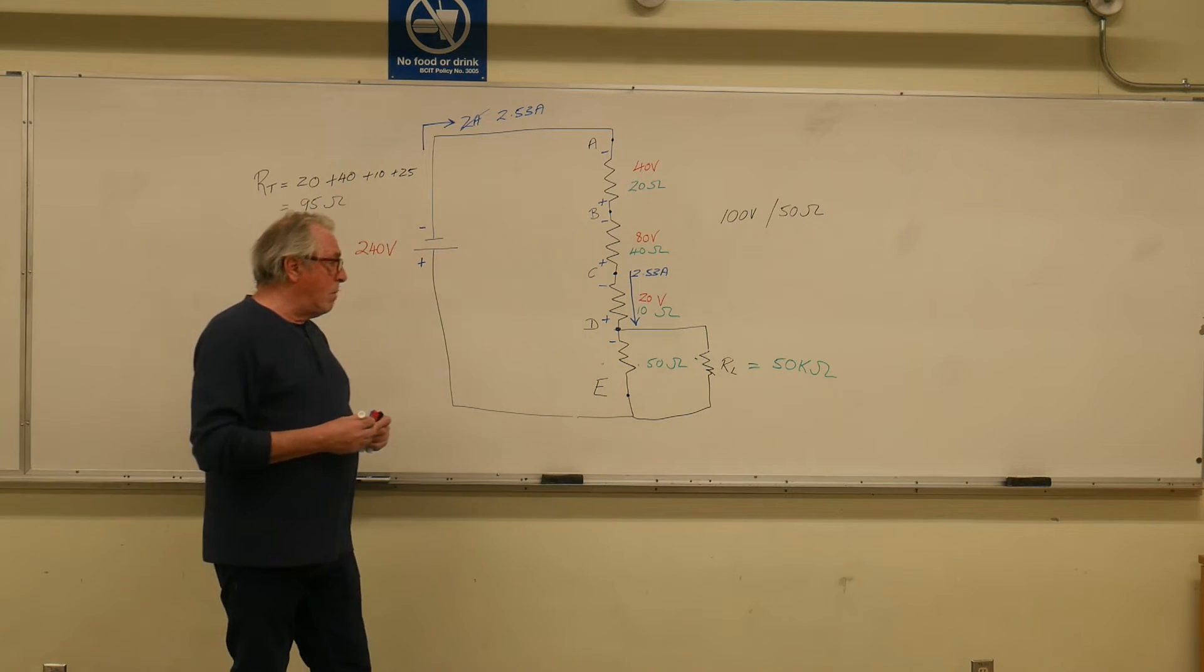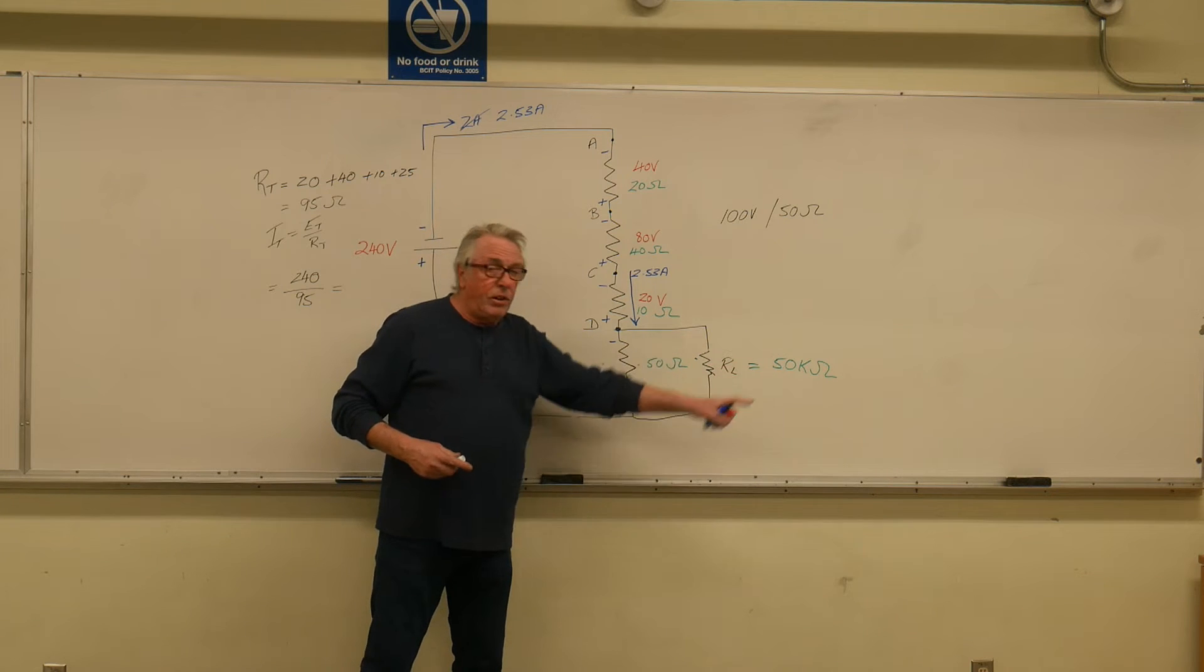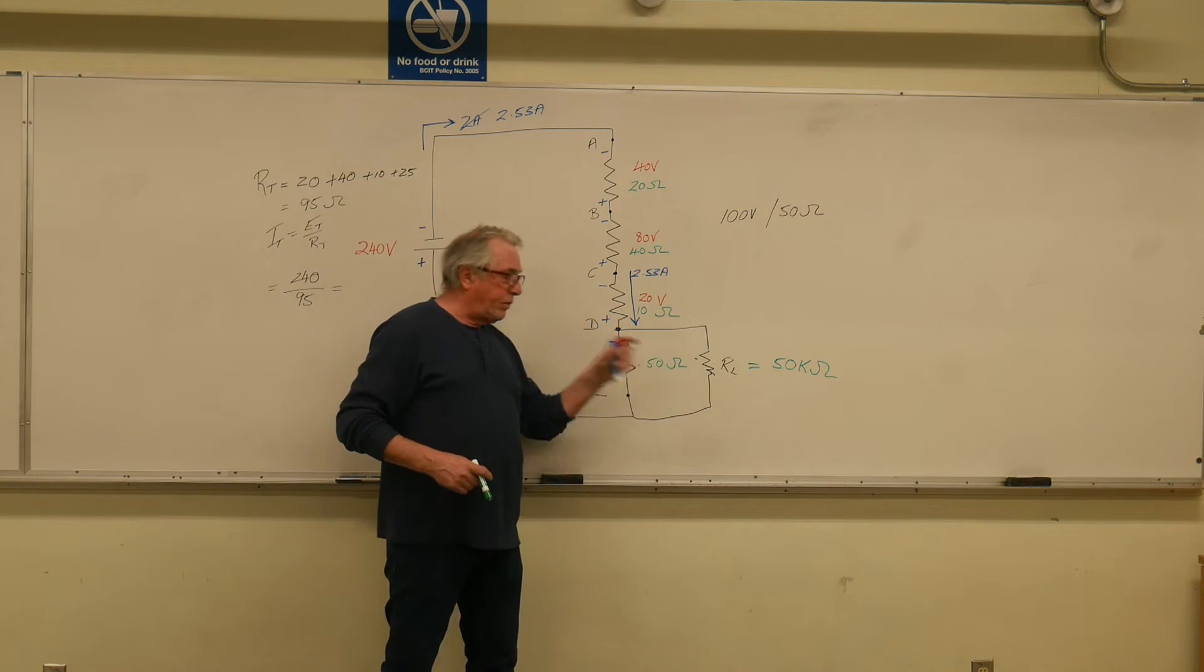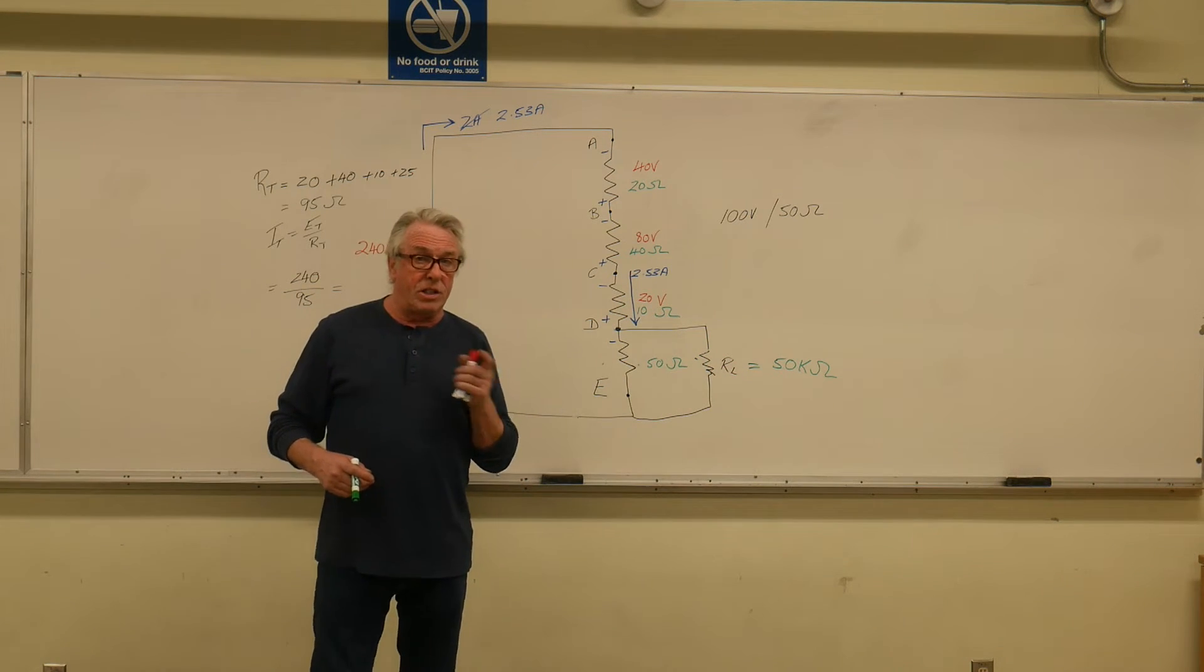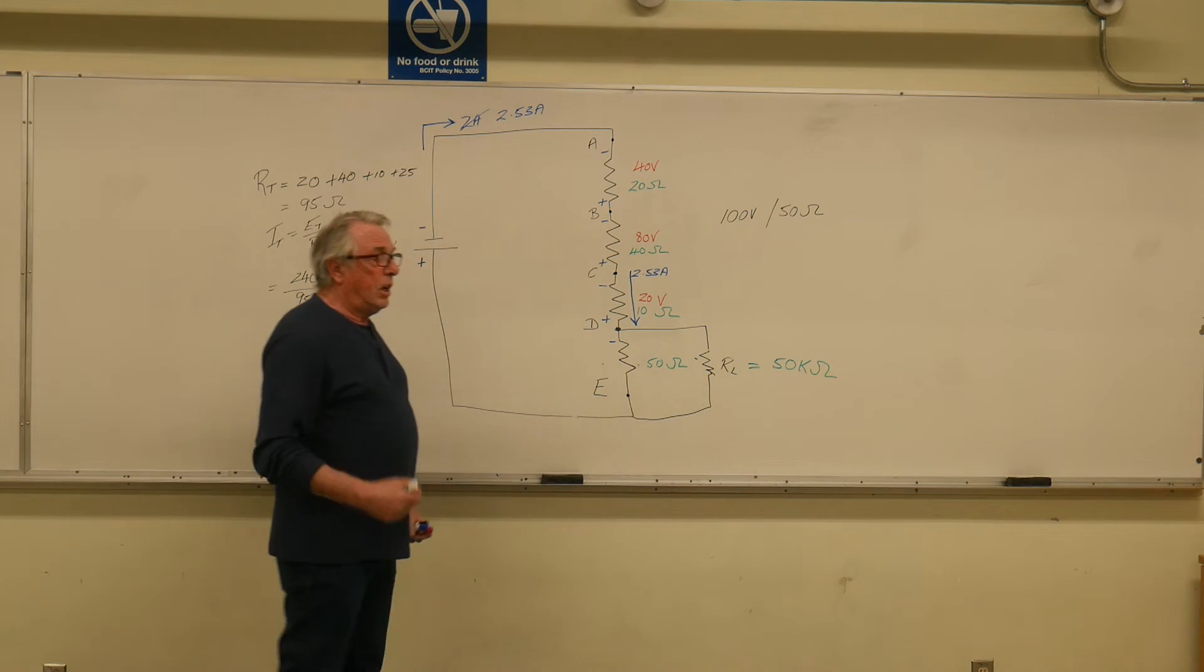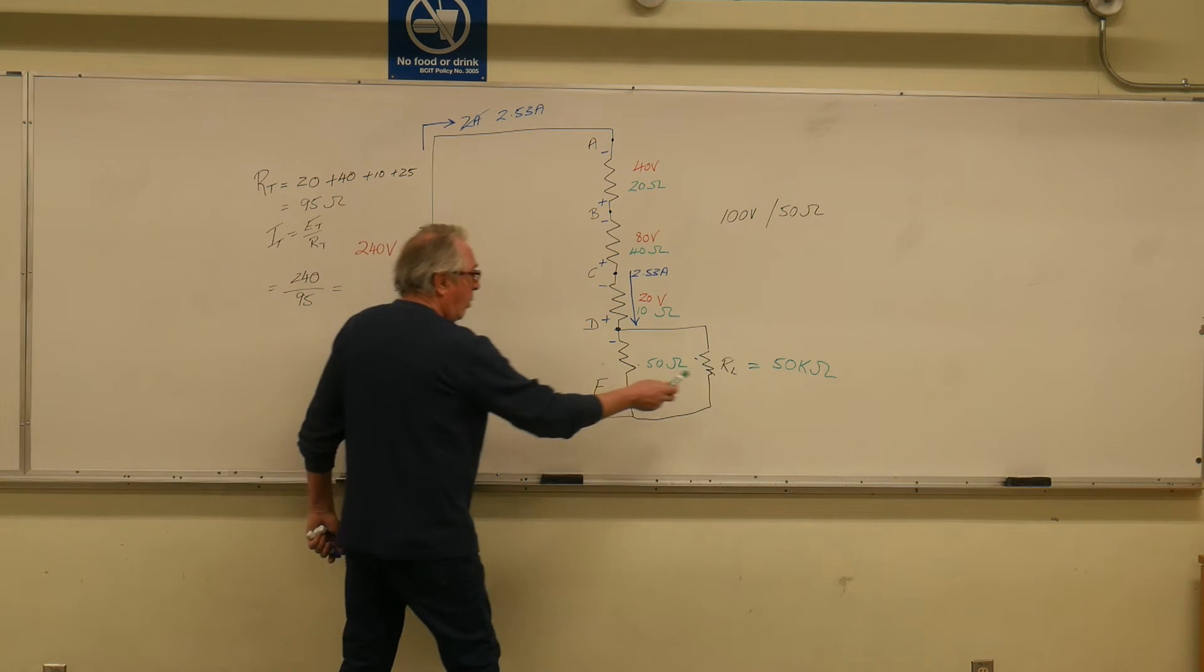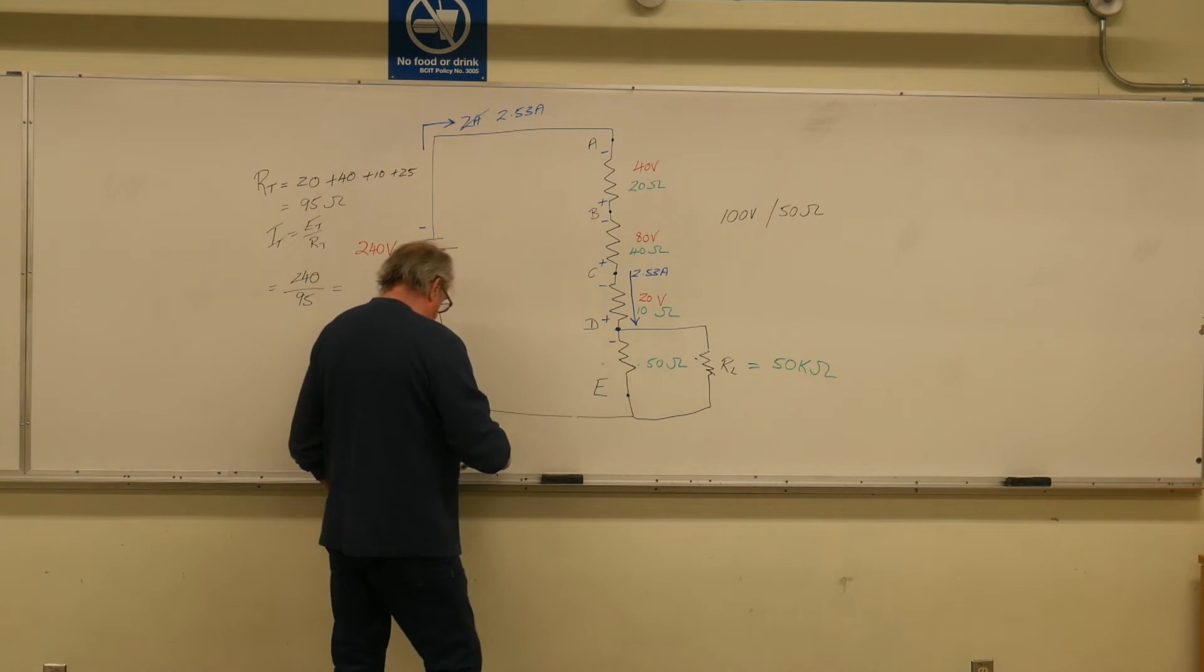Now, that's a much higher resistance, isn't it? 50 kilo ohms. 50 kilo ohms is a lot bigger than 50 ohms. In fact, a thousand times bigger. 50 kilo ohms is a very high resistance. We call that a very small load because it draws a very small current.